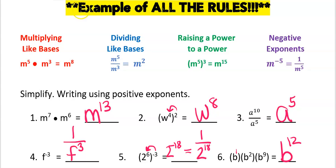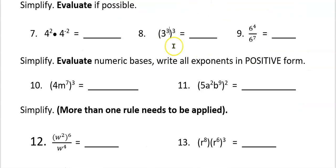Let's move on to the second section. The second section asks us to evaluate if possible. Four to the second times four to the negative second is four to the zero. Anything to the zero power is one.